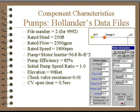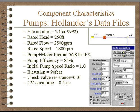A pump description which is primarily available for transient analysis is using the Hollander data files, which are the dynamic head flow characteristics. We have a total of eight files, one through eight, and we can select which file it is.